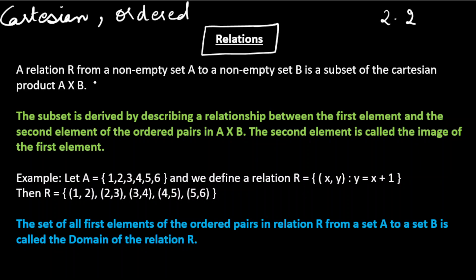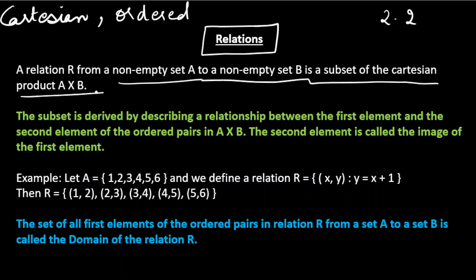A relation from a non-empty set A to a non-empty set B is a subset of the Cartesian product A and B. We will understand this definition with the help of one example.